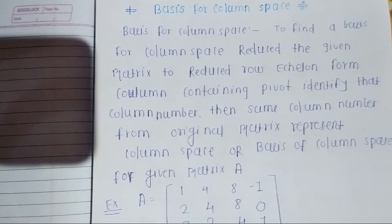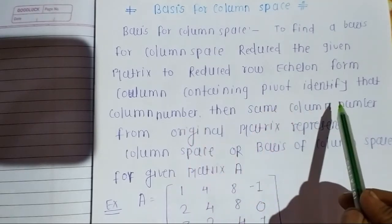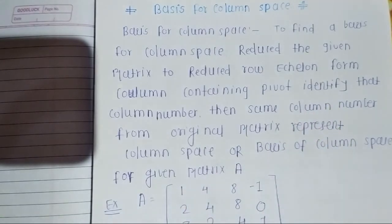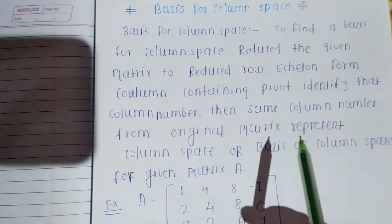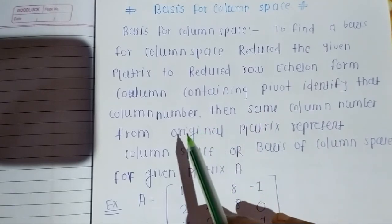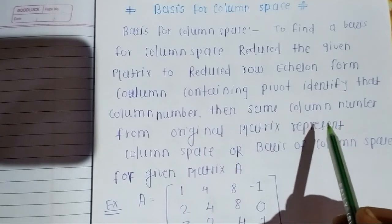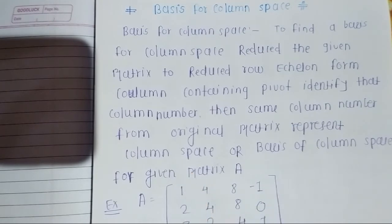So first we reduce the matrix to RREF. After reducing, we find which columns contain the pivot elements — the pivot is the diagonal element present in that column. We identify the columns containing pivot elements, note their column numbers, and then those same columns from the original matrix represent the basis for the column space.